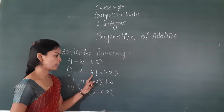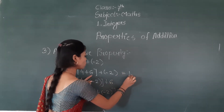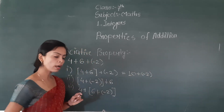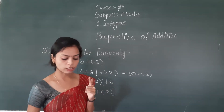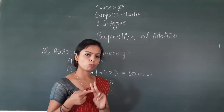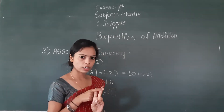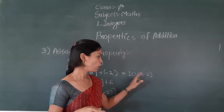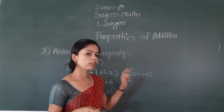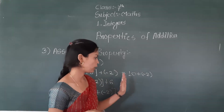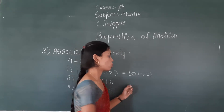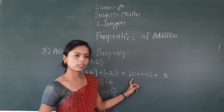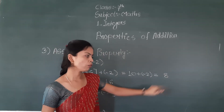For the first way: four plus six equals ten. Then ten plus minus two — one integer is positive and one is negative, so we subtract the smaller from the greater: ten minus two equals eight, and we place the symbol of the greater number, which is plus. So the answer is positive eight.